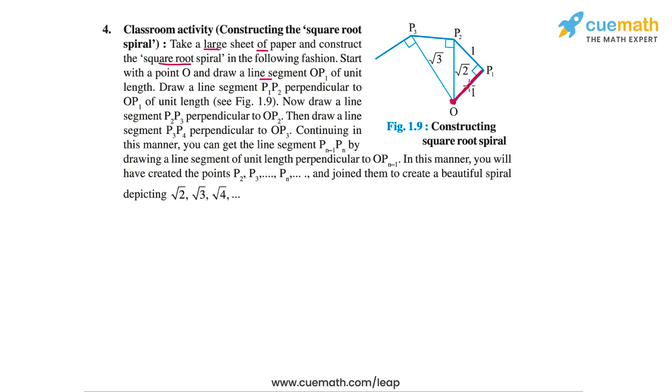Now draw a line segment P1P2 that's perpendicular to OP1 and of unit length. So this is the segment P1P2 of unit length perpendicular to OP1. Then we can see using the Pythagoras theorem that OP2 has a length of root 2 units.